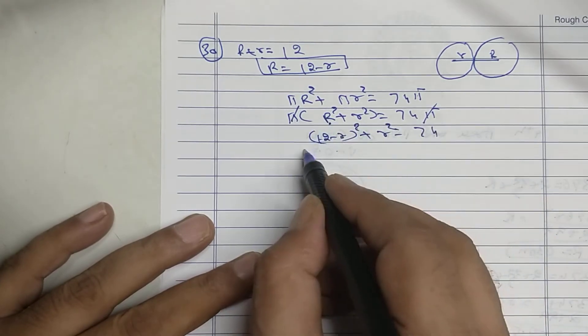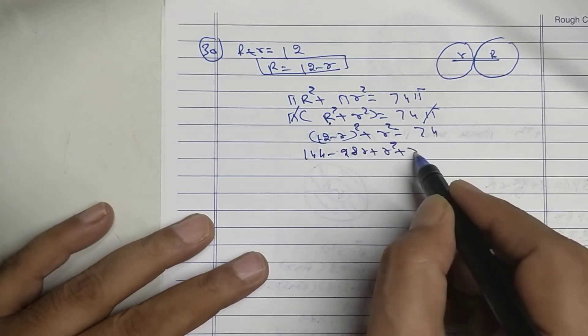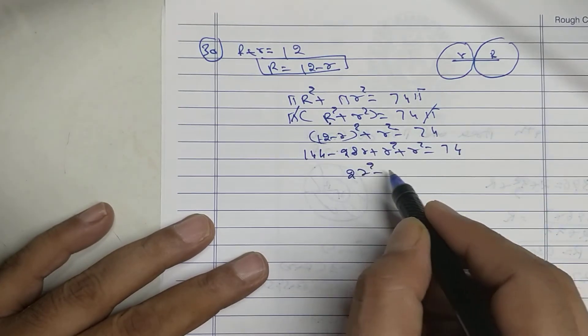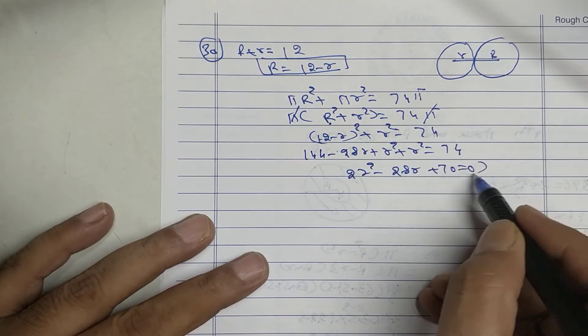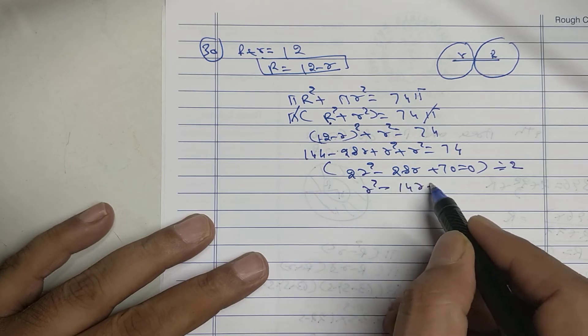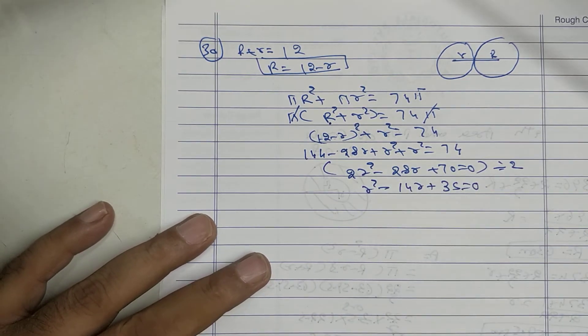In the place of big R I will put 12 minus r square plus r square equal to 74. Apply a minus b whole square: 144 minus 28r plus r square plus r square is 74. 2r square minus 28r plus 70 equal to 0. Divide by 2: r square minus 14r plus 35 equal to 0.